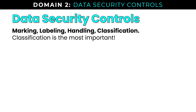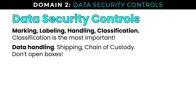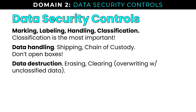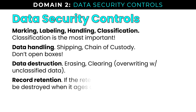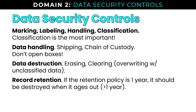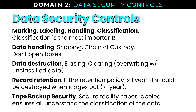Let's start with data security controls. Marking, labeling, handling, and classification may come up on the exam, with classification being the most important. Data handling, shipping, chain of custody — remember, don't open boxes. With data retention comes data destruction. And with record retention, always remember that data should be destroyed when it ages out per your retention policy. Tape backup security may come up as a legacy concept — having a secure facility and labeled tapes ensures everyone understands the classification of the data.